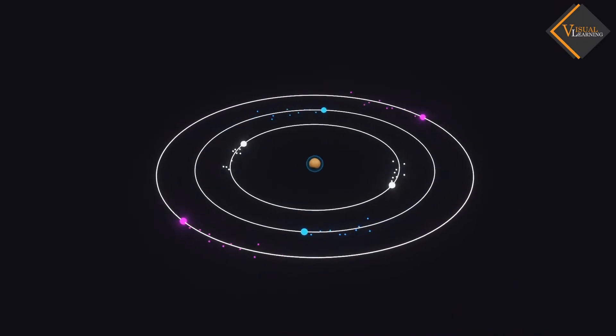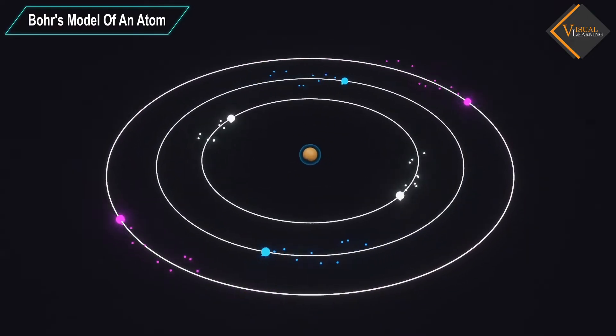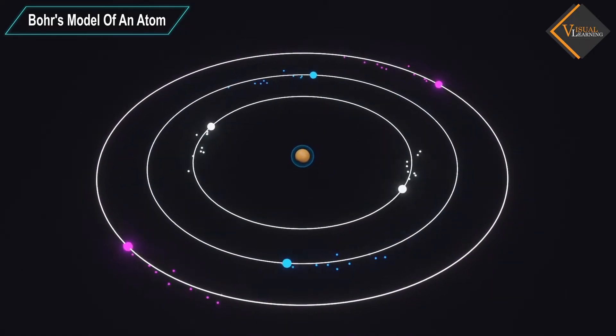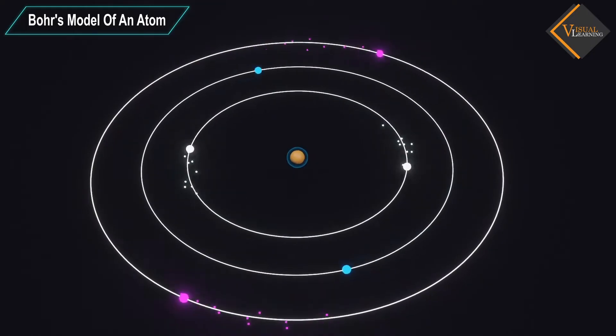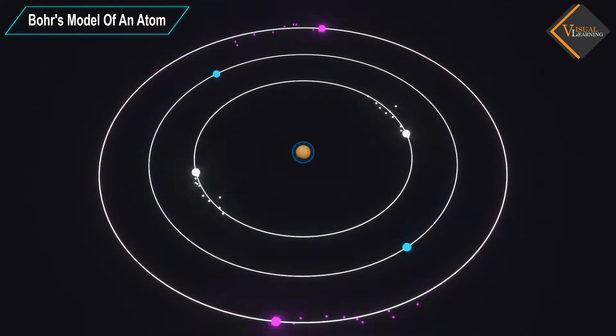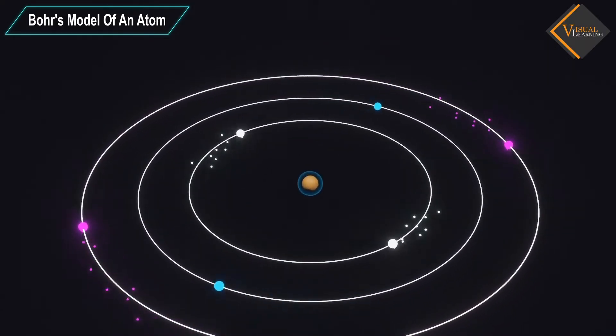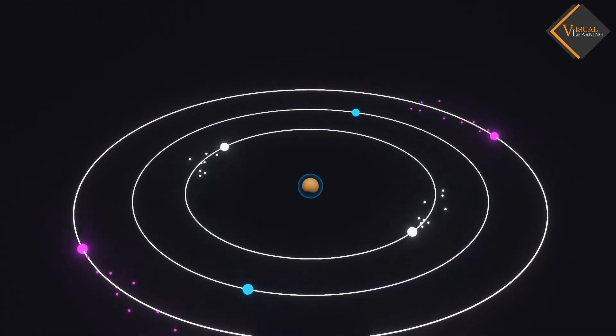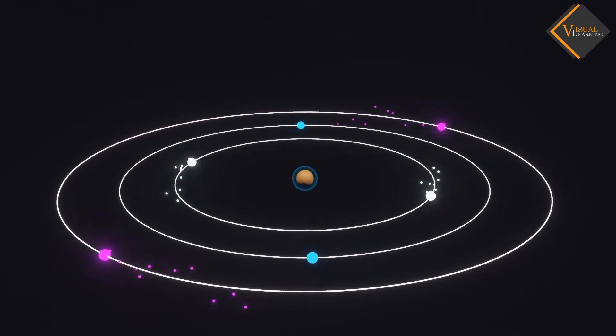In order to overcome the objections raised against Rutherford's model of the atom, Bohr's model was proposed in 1915. Bohr theory modified the atomic structure model by explaining that electrons move in fixed orbitals and not anywhere in between. He also explained that each orbit has a fixed energy.